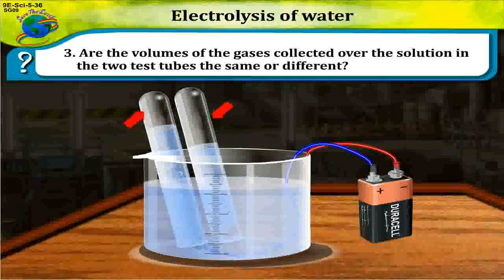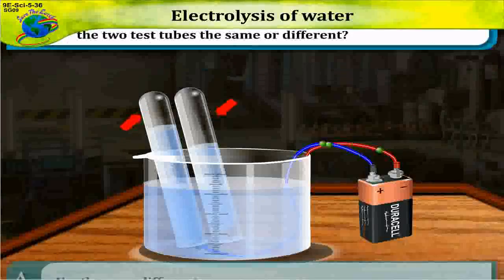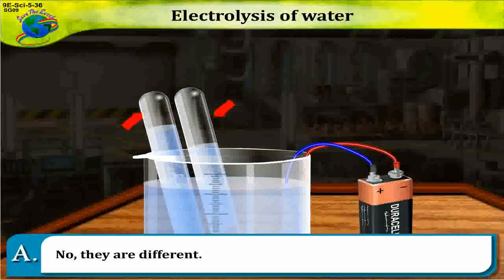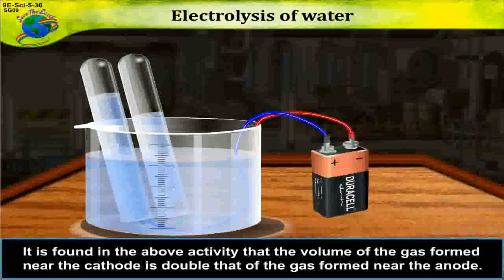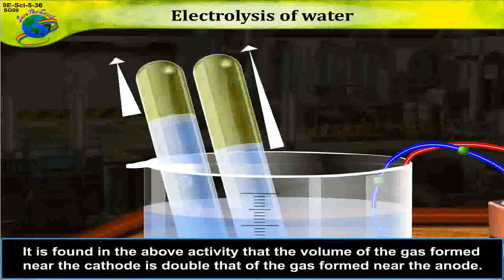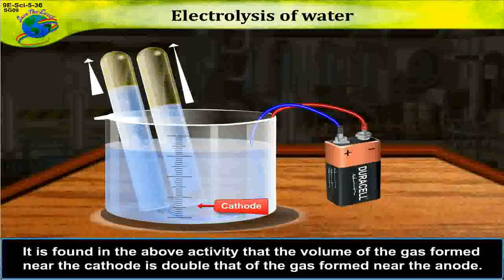No, they are different. It is found in the above activity that the volume of the gas formed near the cathode is double that of the gas formed near the anode.